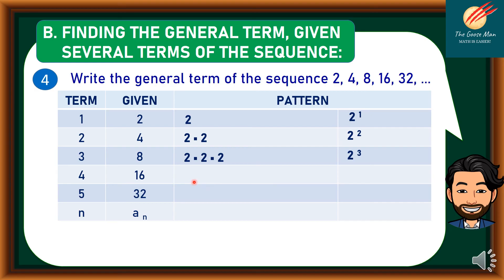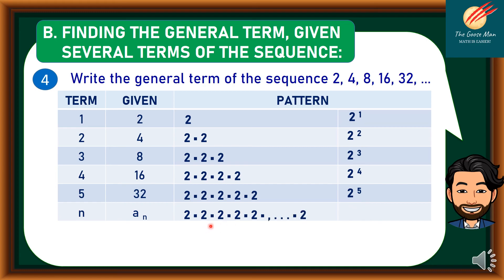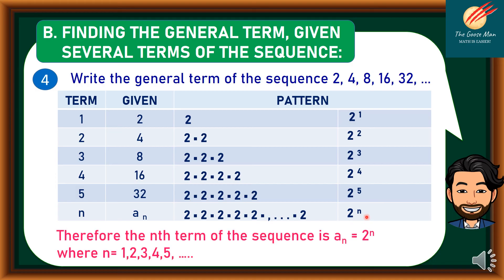Continuing the pattern: 16 can be rewritten as 2 to the fourth power, and 32 is 2 to the fifth power. The exponent matches the term number in each case. Therefore, the nth term of the sequence is a sub n equals 2 raised to n, where n equals 1, 2, 3, 4, 5, and so on and so forth.